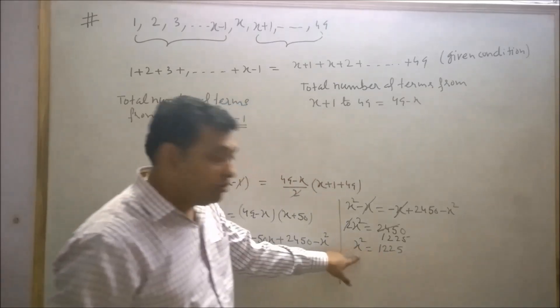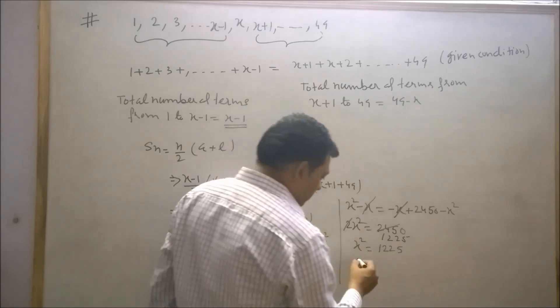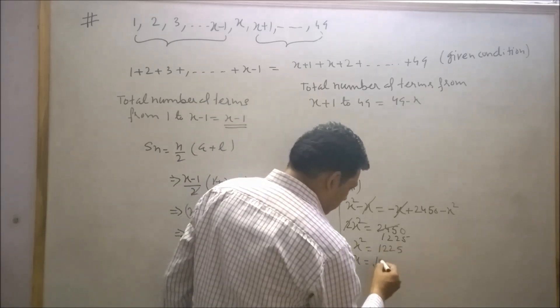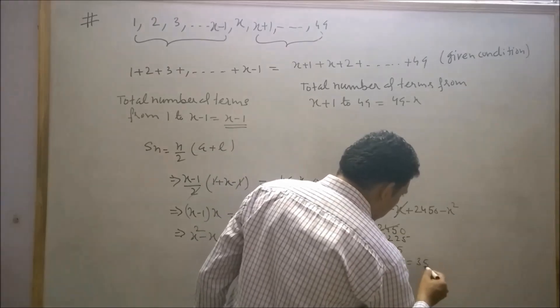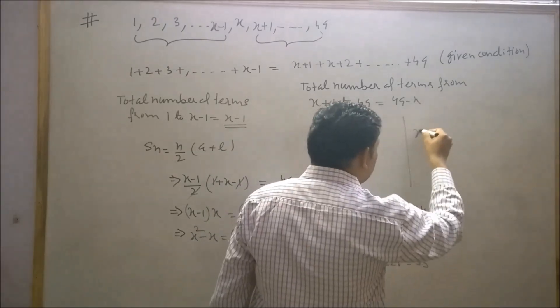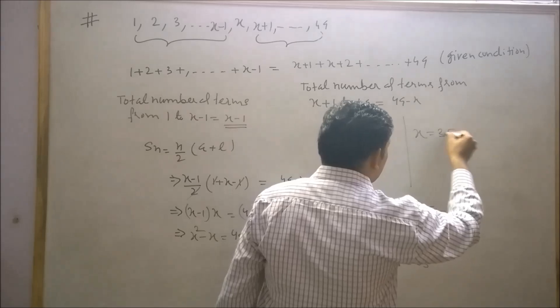Now, taking the square root on both sides, this will be equal to √1225 which is equal to 35. So x is equal to 35.